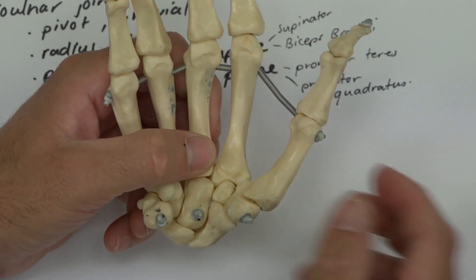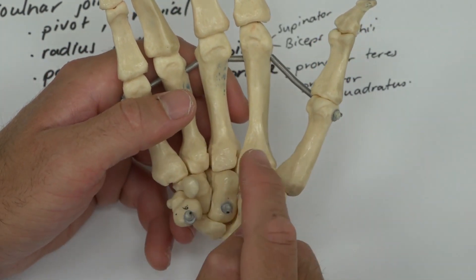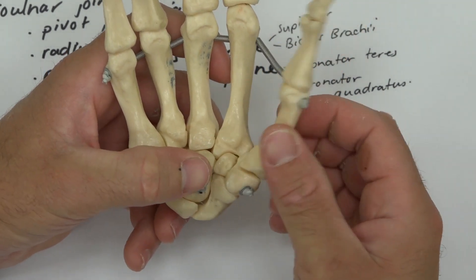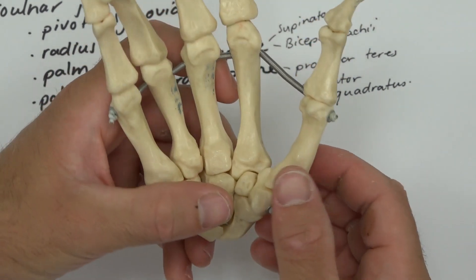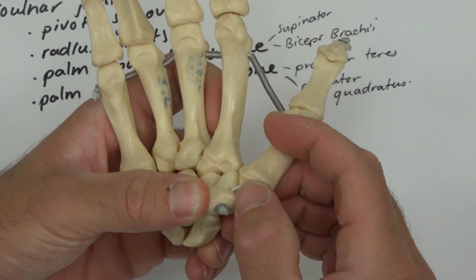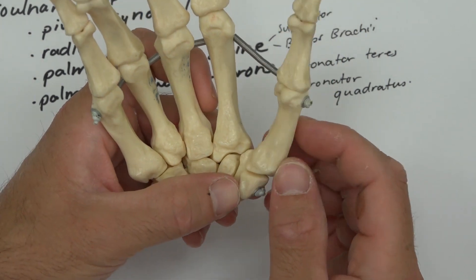The carpometacarpal joint itself—these four articulations two, three, four, and five are immobile, whereas the first one is mobile. This is a type of saddle joint, just like a horse, so you can see that its shape has a saddle-type orientation.